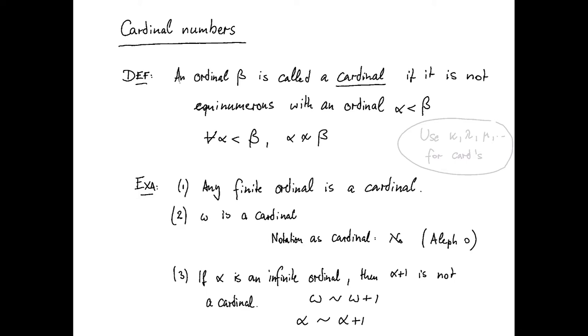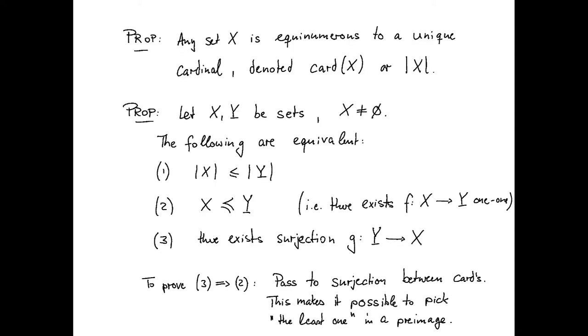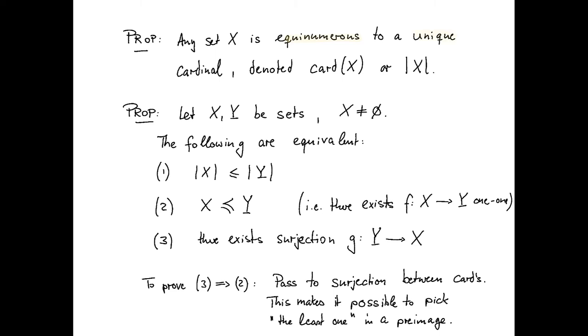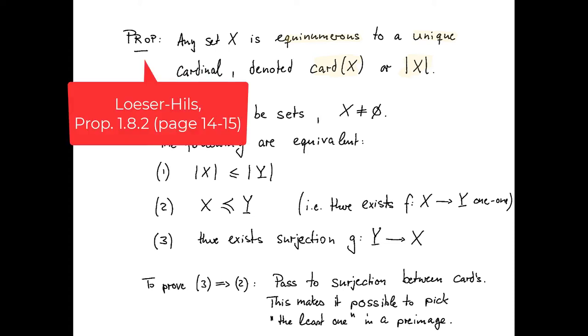Now, as we observed before, we can show, assuming the axiom of choice holds, that every set X is equinumerous to a unique cardinal, denoted by card(X) or just absolute value X. The reason for that again is that every set can be well-ordered assuming the axiom of choice. That set or that well-ordering is isomorphic to a unique ordinal, and then we can pass to the least equinumerous ordinal to that, and that's the cardinality of X.